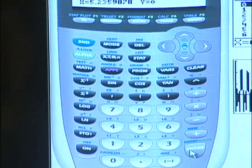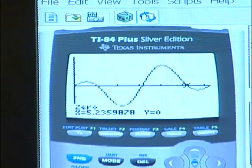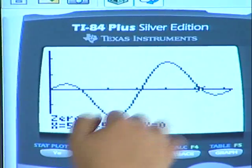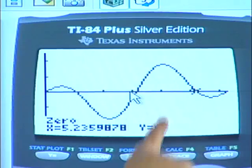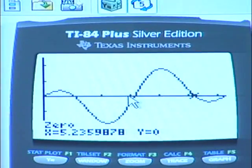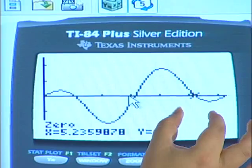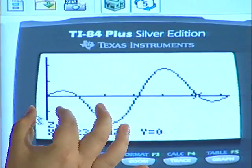The second x-intercept is 5.24 and we see that the graph is symmetrical about this point, therefore this value is nothing but 2π minus π over 3 because the distance here is the same as this distance.